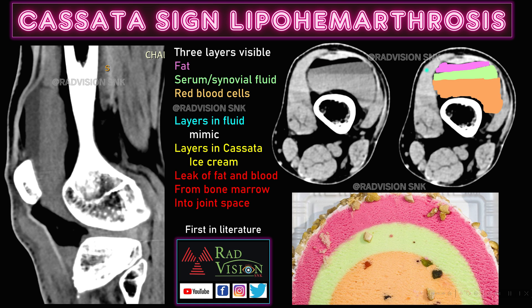I have marked the three layers: the pink fat layer, the serum or sinole layer in green, and the red blood cells in orange or brown. These three layers mimic the three layers of a cassata ice cream, so this is nothing but the 'Cassata Sign' or 'Cassata Appearance' of the fluid-fat-debris level in lipohemarthrosis. This is first in literature.